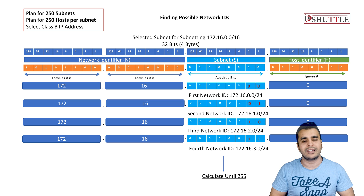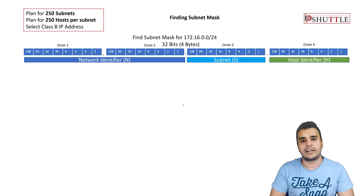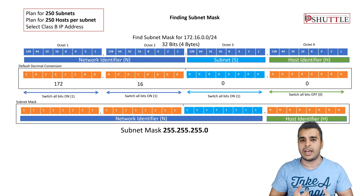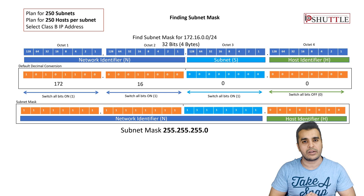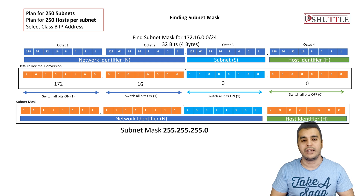You have now exhausted the complete subnet range — this is how you find all possible ranges to write into your Excel sheet. For the subnet mask, the rule is: convert all network identifier bits to 1 and add them. In this example the first, second, and third octets are all ones, giving 255.255.255.0. For more details please check the previous lecture.